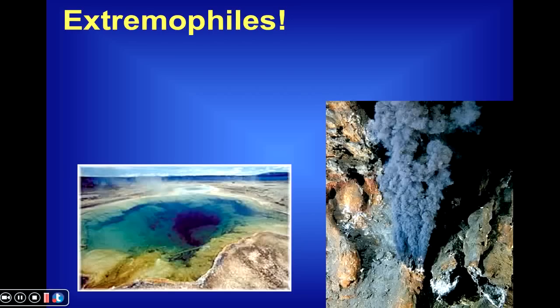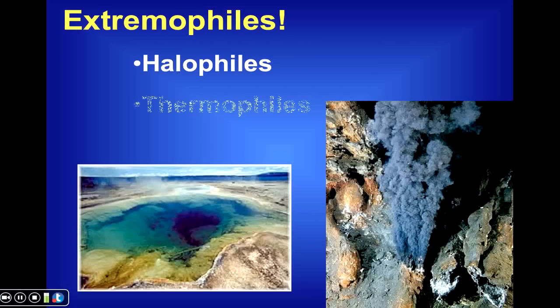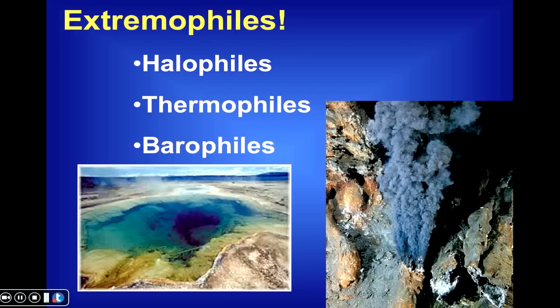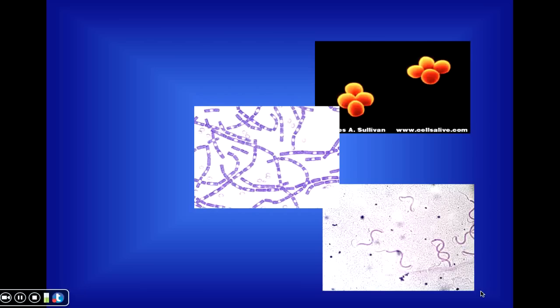Bacteria can thrive in many harsh environments. We can talk about extremophiles — those species that thrive in very harsh, extreme conditions. For example, there are some bacteria that thrive in very salty water where the concentration of salt is so high it essentially kills everything else. Other bacteria can thrive in very hot environments or under very high pressures, such as conditions at the bottom of the ocean. We can talk about thermophiles, those that thrive in hot conditions, and barophiles, those that thrive under very high pressures.